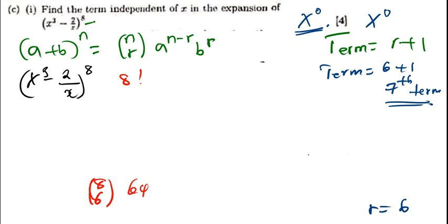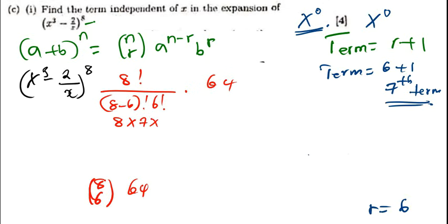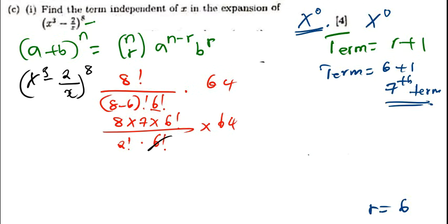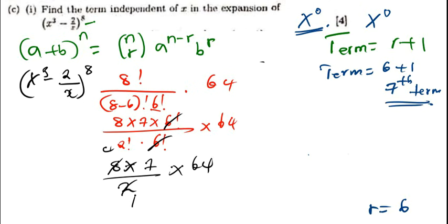So now we need to find the exact value. We have 8 factorial divided by (8 minus 6) factorial times 6 factorial, times 64. So 8 is the same as 8 times 7 times 6 factorial, since there's already 6 factorial. This 8 minus 6 is 2 factorial. So 2 factorial times 6 factorial, then times 64. So 6 factorial cancels, 2 factorial is 2, I've got 8 times 7 divided by 2, then times 64. So 4 times 7 is 28 times 64.